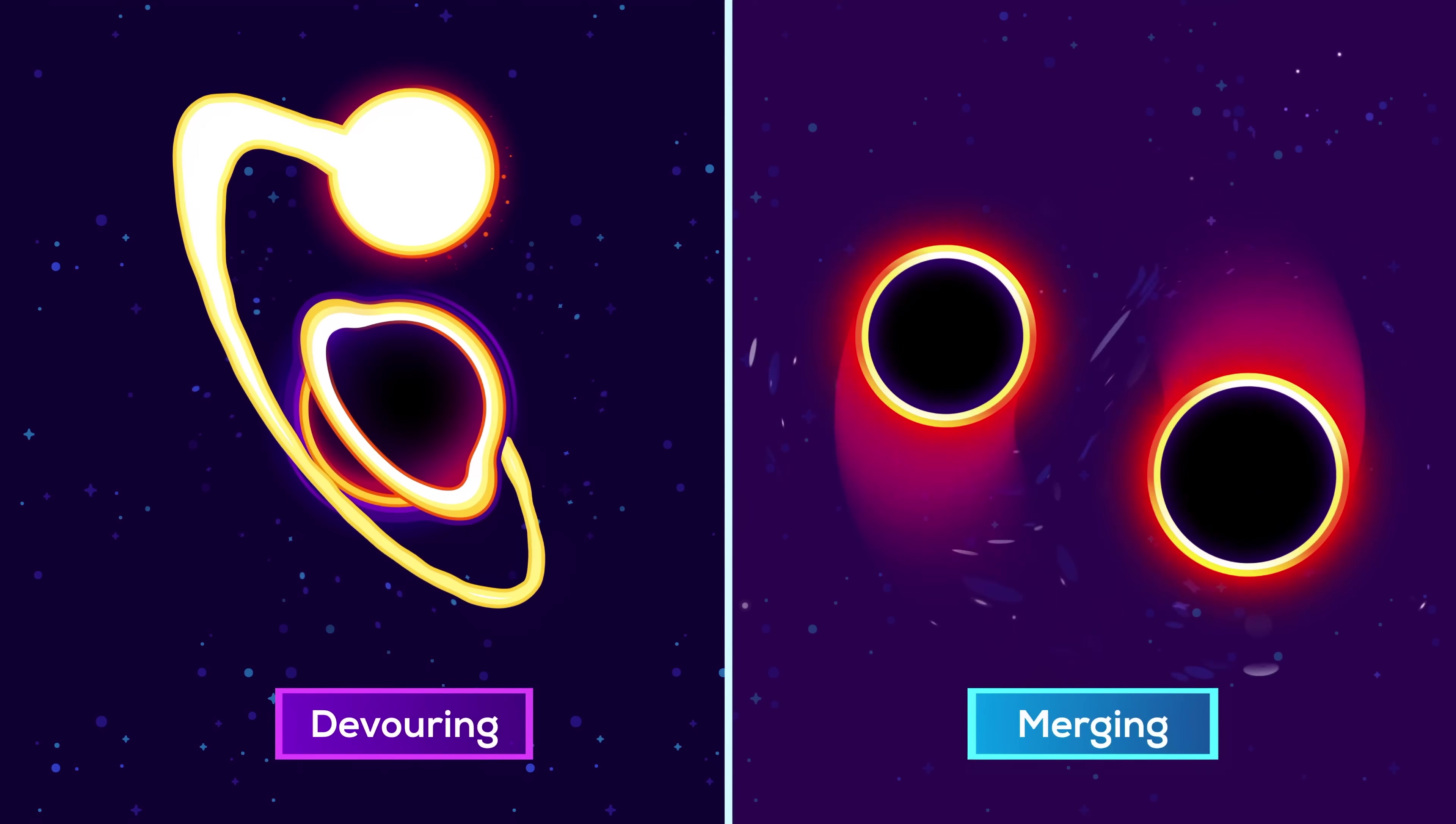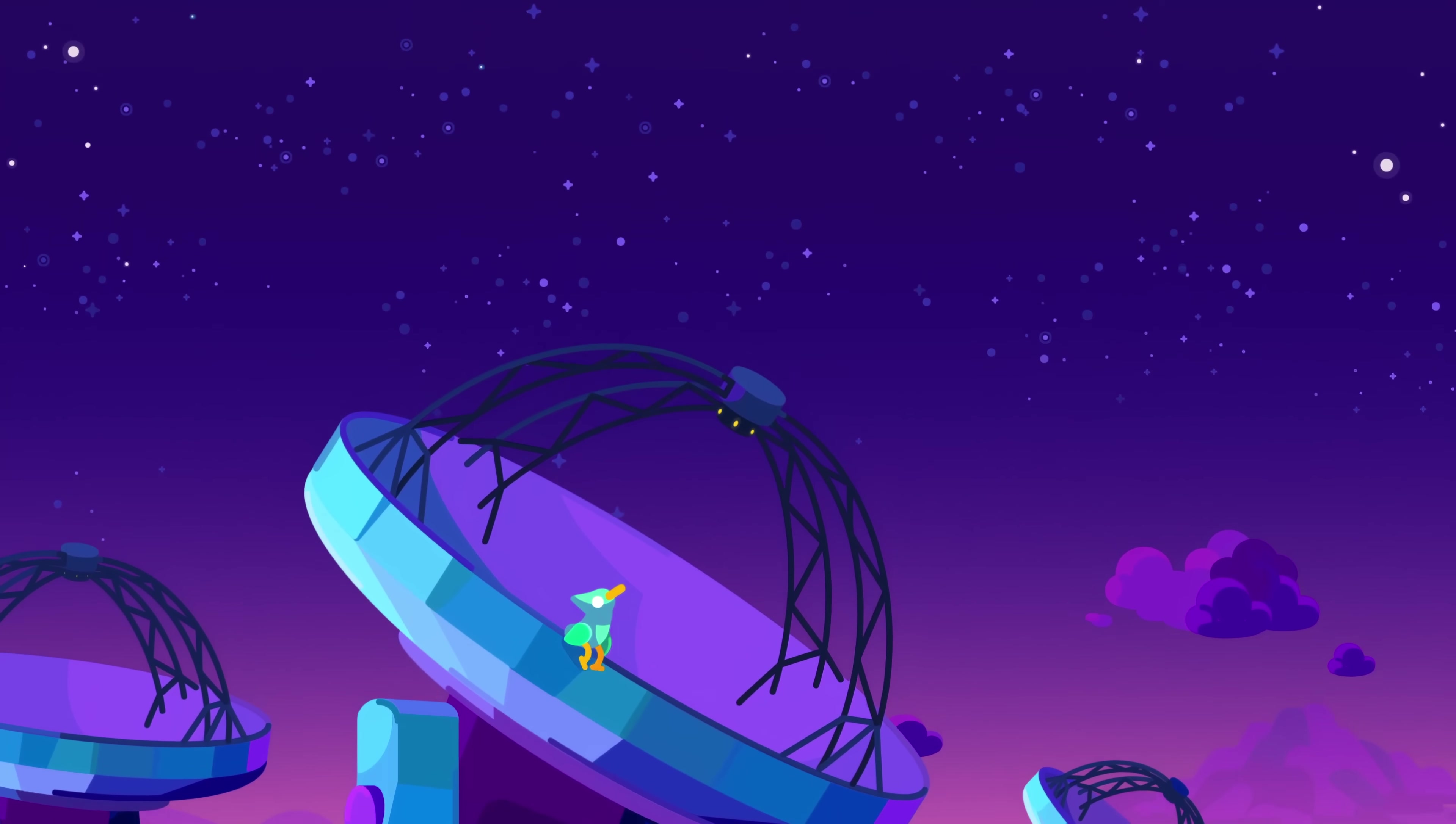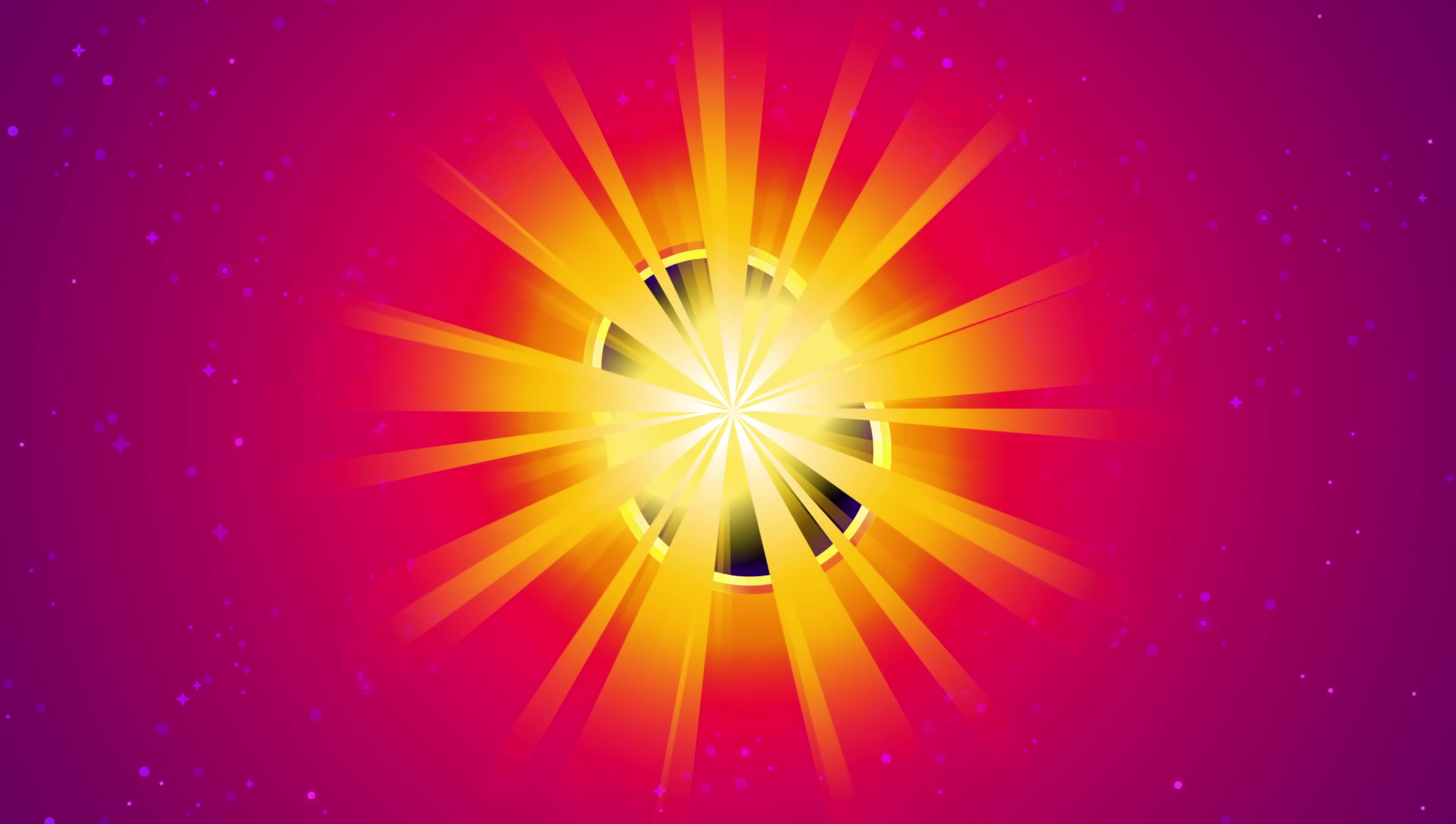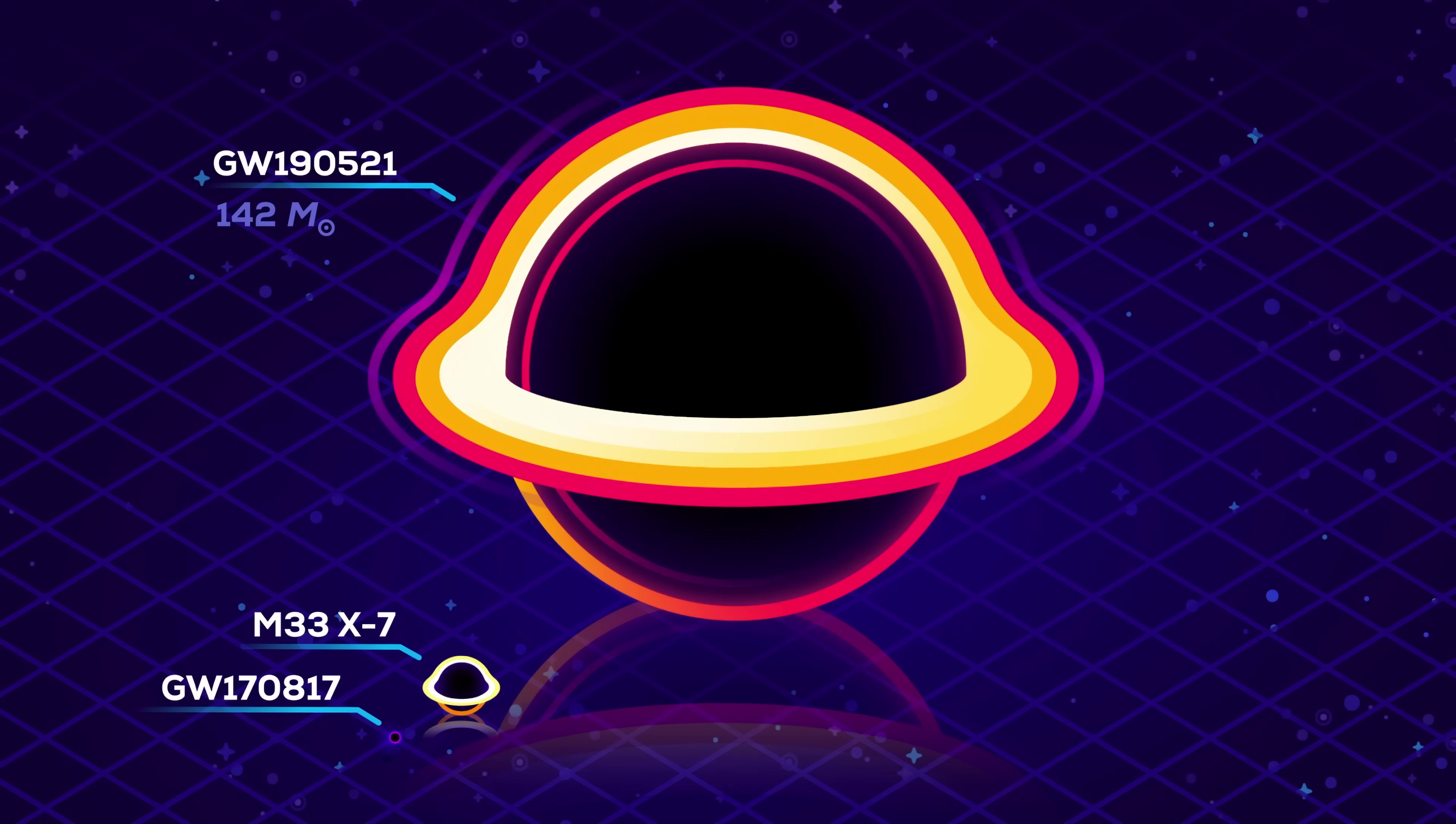To grow much larger, black holes have to either devour a lot of stars, or better, merge with one another. The instruments that make it possible to detect these mergers are very new, so we're currently discovering a lot of exciting things. Like two massive black holes that we detected in a galaxy 17 billion light years away. As they spun around each other violently, they released more energy in the form of gravitational waves than the combined light from all the stars in the Milky Way in 4,400 years. The new black hole they formed is about the size of Germany and is 142 solar masses.